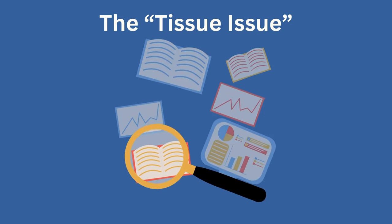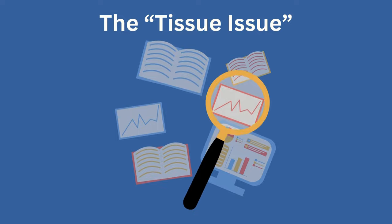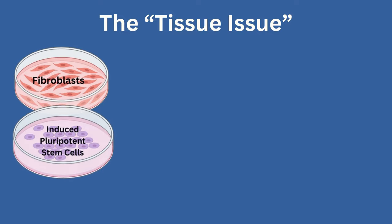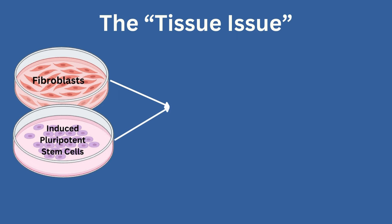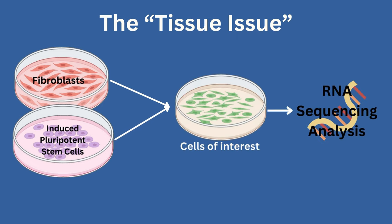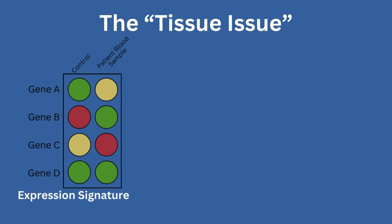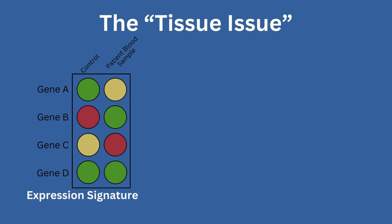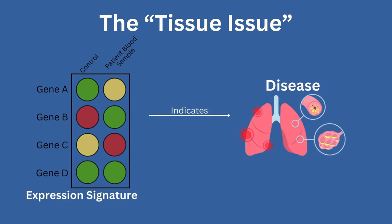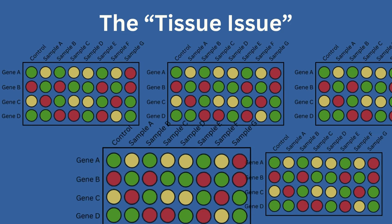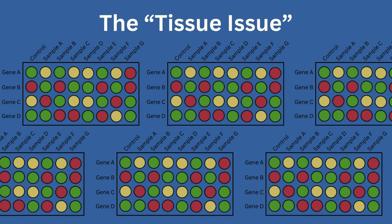There are a few ways researchers are looking to get around the tissue issue, including the transformation of fibroblasts or induced pluripotent stem cells. However, this can be quite time-consuming, labor-intensive, and still invasive. Expression signatures using blood samples are also promising as they look at how expression across multiple genes is changed by a disease. However, these require a lot of research and validation prior to clinical use.